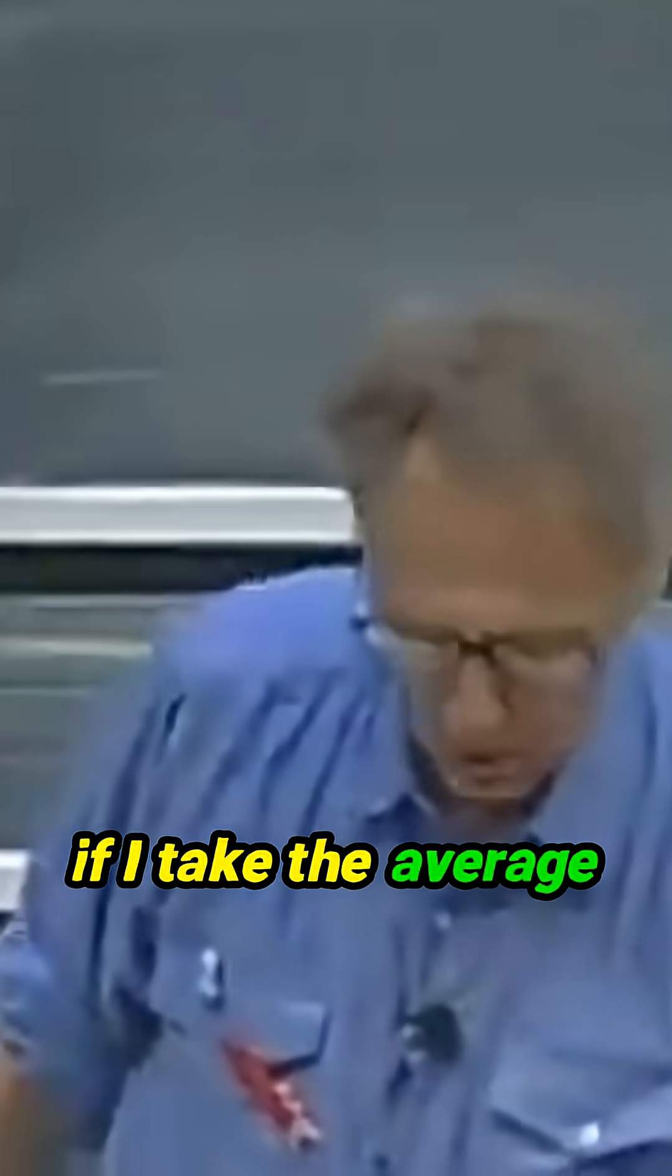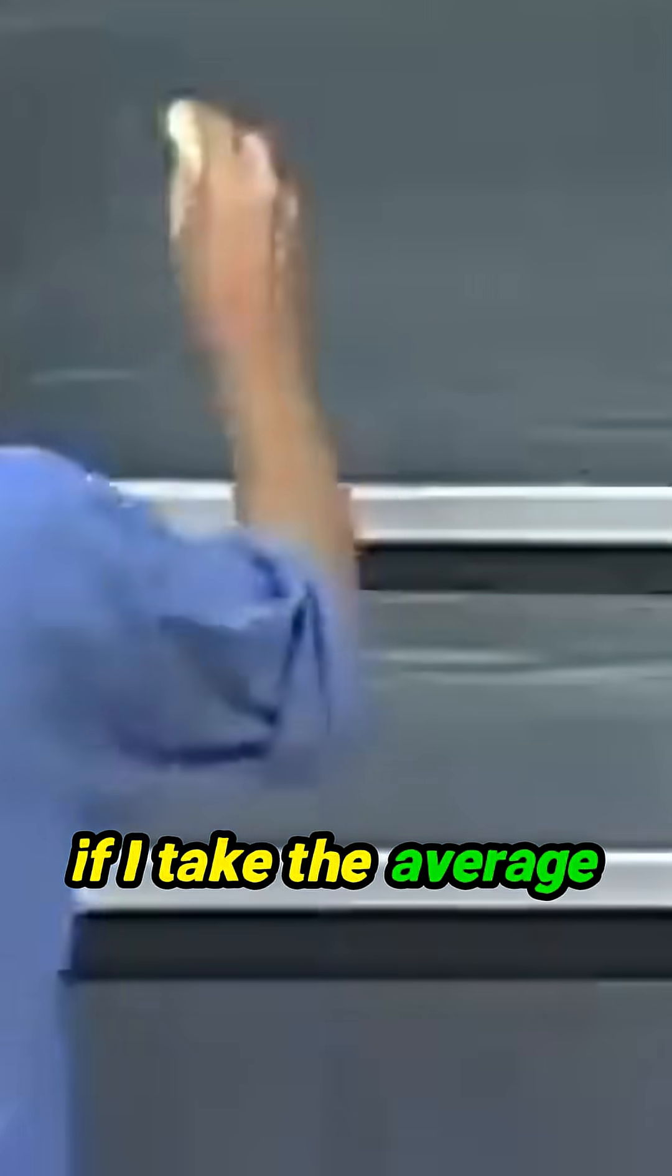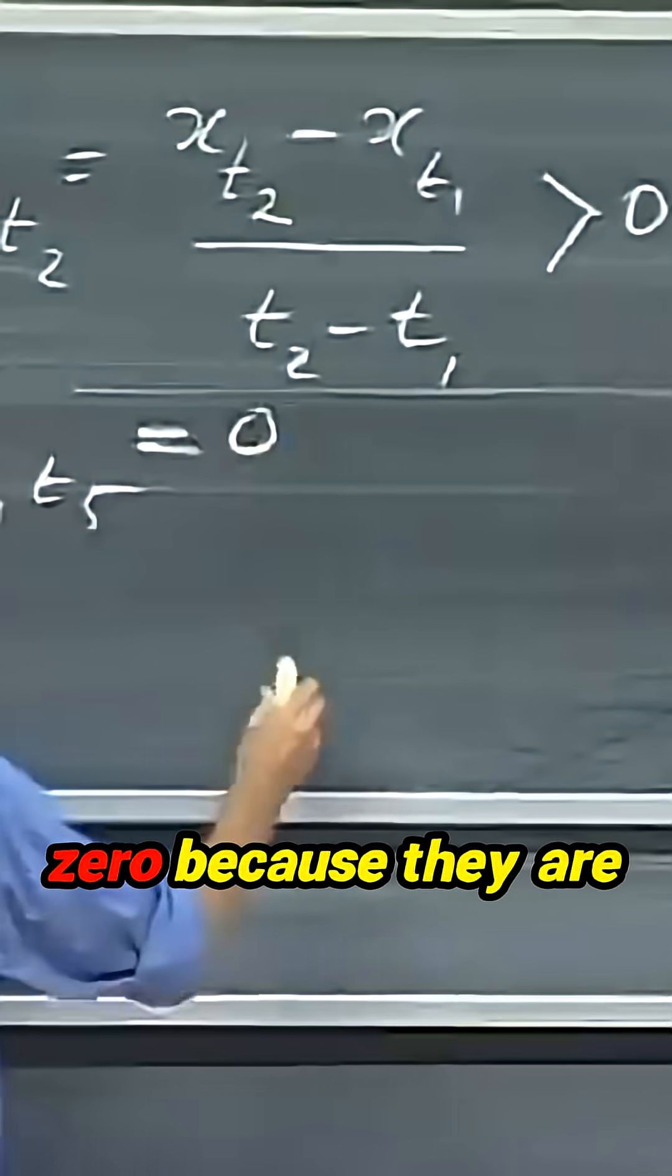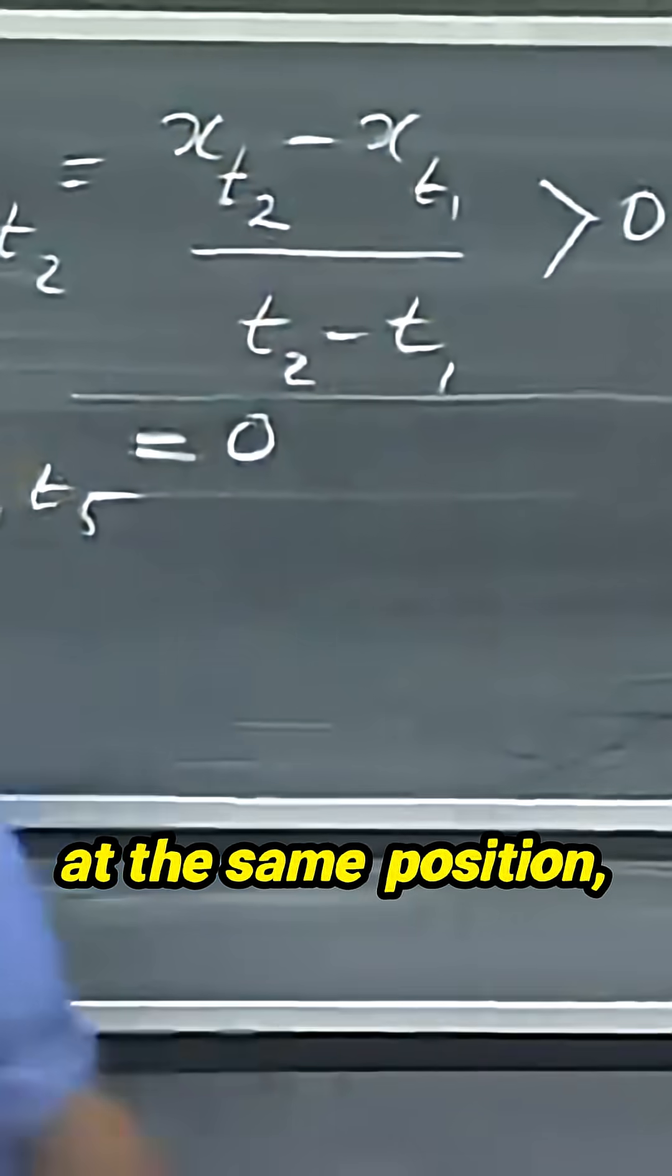However, if I take the average velocity between t1 and t5, that would be zero because they are at the same position, so the upstairs is zero.